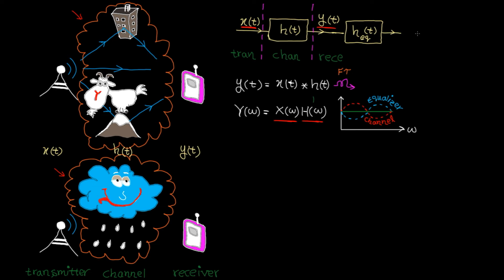Let's call the equalizer H_EQ. Obviously, EQ stands for equalizer. The whole point to use equalization is to recover the original message, x(t), sent by the transmitter.